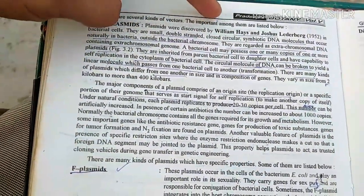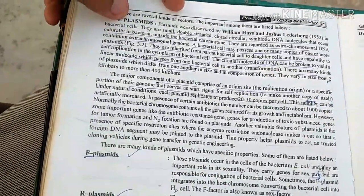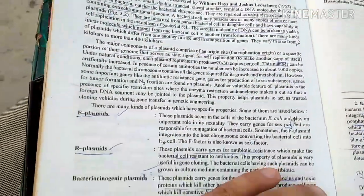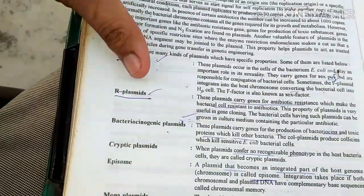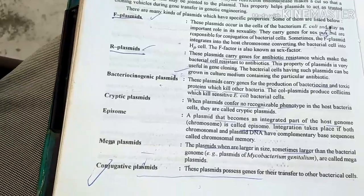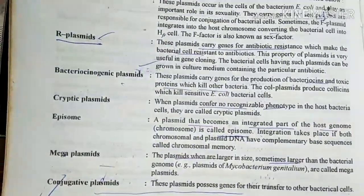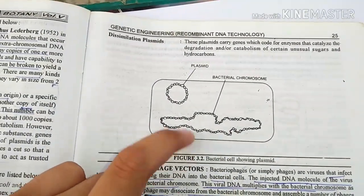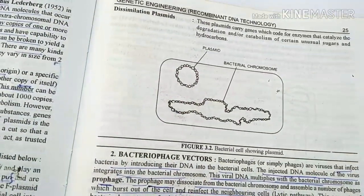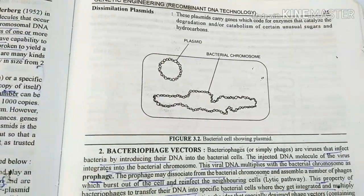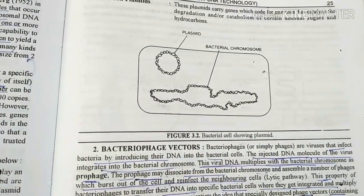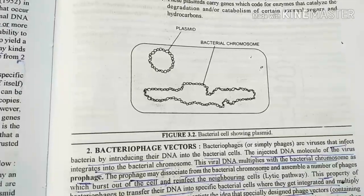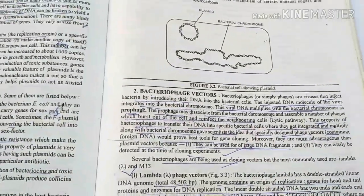The first type of vector is the plasmid, named by William Hayes. A plasmid is extra-chromosomal circular DNA separate from the main chromosomal DNA. It can help with fertility, reproduction, and other activities. Plasmid can be removed from the main DNA independently.